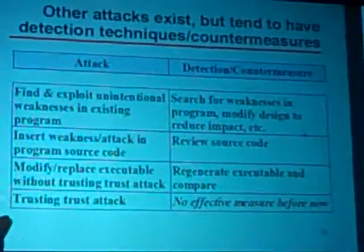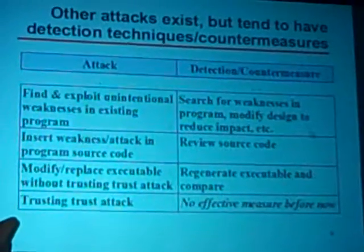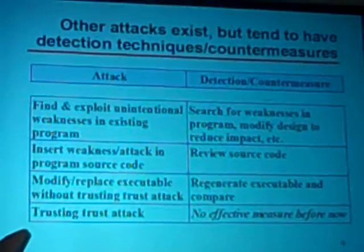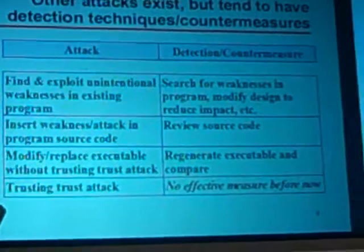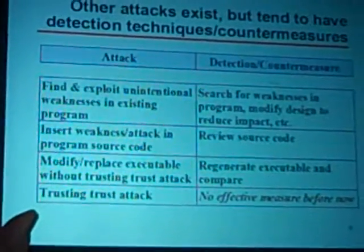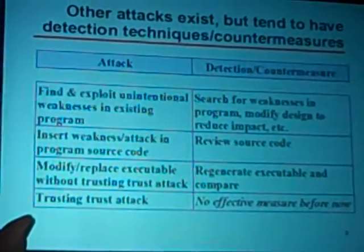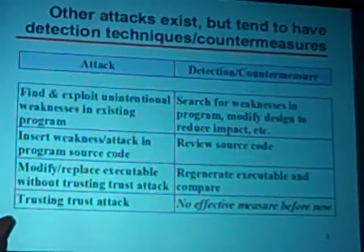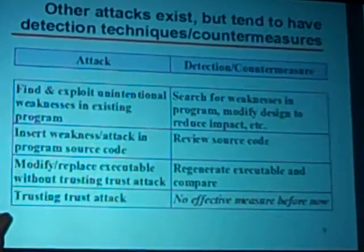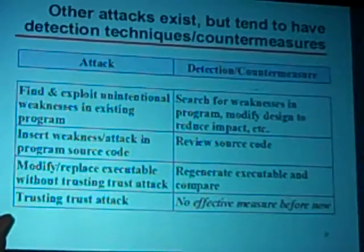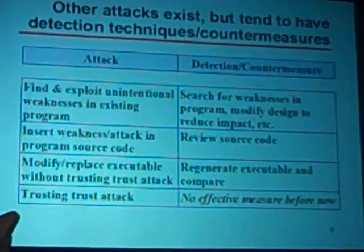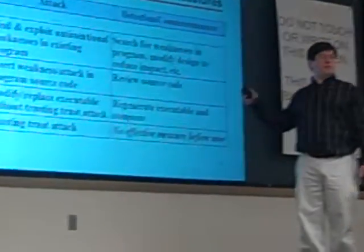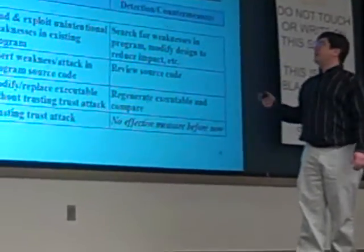We can find and exploit unintentional weaknesses and fix them before they go into the field. If an attacker inserts weaknesses into the program code, other people can review the source code and hopefully find the problem. You can regenerate executables if they're modified. But when you apply the trusting-trust attack, there really hasn't been an effective defense — and that's what makes this problem important.